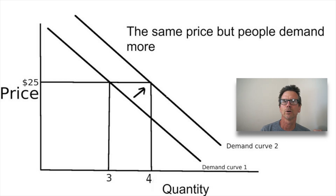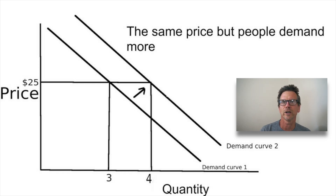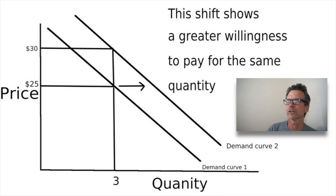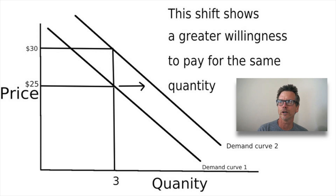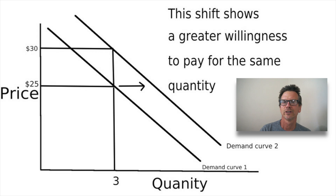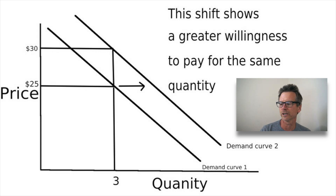Whenever you see D1 and D2 on a graph, you know that D2 sequentially comes after D1. Another way of looking at a shift is that it shows a greater willingness to pay a higher price for the same quantity. But most people look at it from the price perspective — that the price stays the same — I just wanted to show you the flip of the converse.